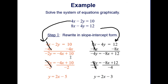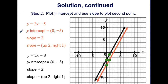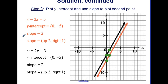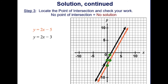You should notice something about these equations when we identify the slope and y-intercept. The orange line has a y-intercept of (0, negative 5) and slope of 2 over 1. The black line has a y-intercept of (0, negative 3) and the same slope of 2 over 1. These are two parallel lines, so there is no solution.